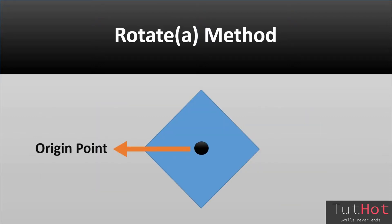As I have told you, the rotate value spins an element around a fixed point. That fixed point is the one on which the element rotates, and it is also known as the transform origin. When you use the rotate value, its default origin is the center of the element, but you can set your own custom transform origin using the transform-origin property.